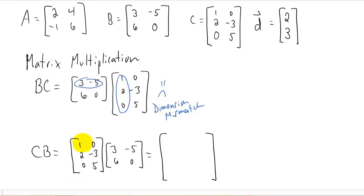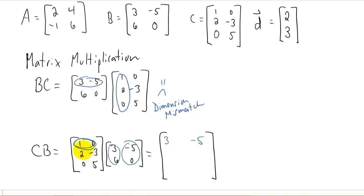Let's go through it pretty quickly, but it's the same process. We're going to take row one and column one of C and B respectively and take a dot product and you're going to get three. For the next element, we're going to take row one and column two and that dot product is going to give us negative five.